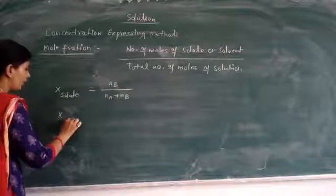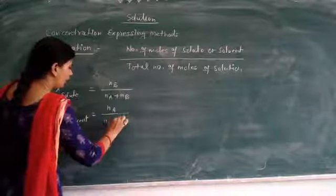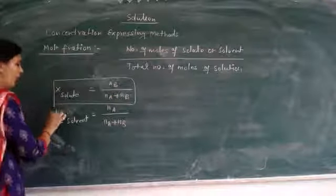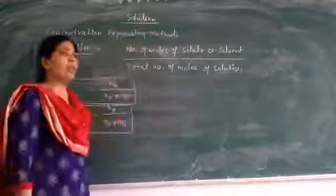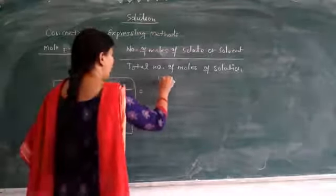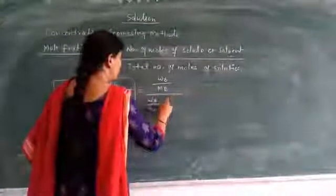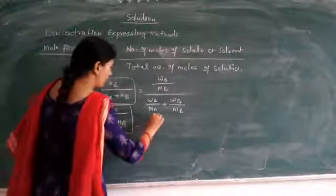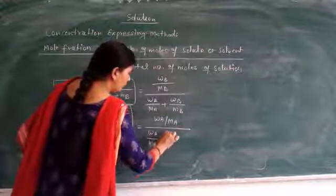Similarly, mole fraction of solvent is the number of moles of solvent upon total number of moles. Number of moles is calculated by given mass upon molecular mass. So for the formula, mole fraction of solute equals W over MA, divided by W over MA plus W_solvent over M_solvent.